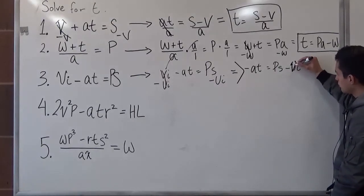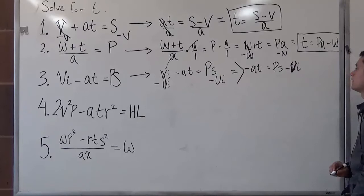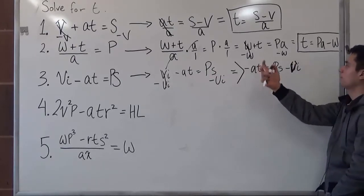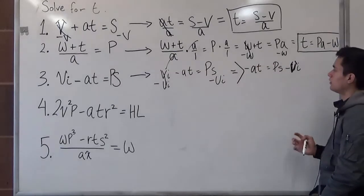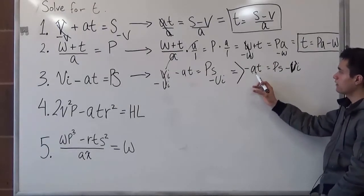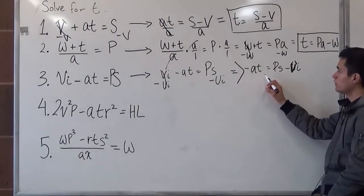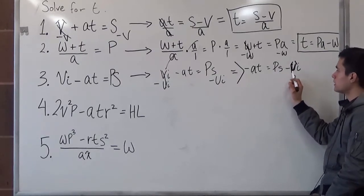So now we have negative a times t is equal to p times s minus v times i. It looks a little bit like a u, but we're just going to put a v. So again, as we did before, we want to get t by itself.